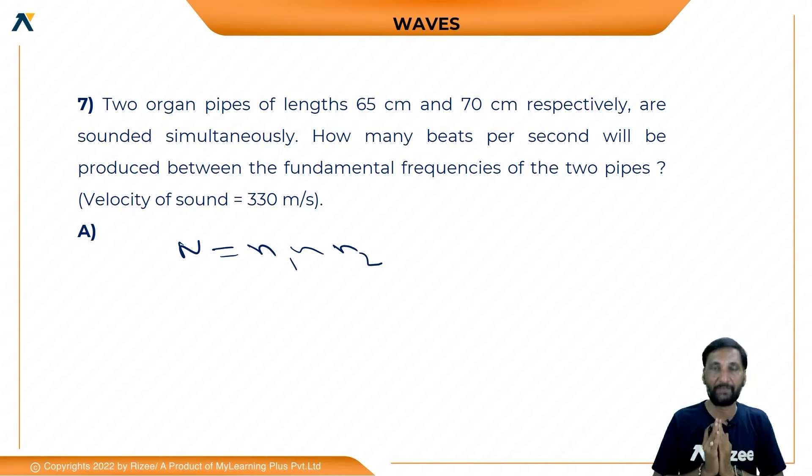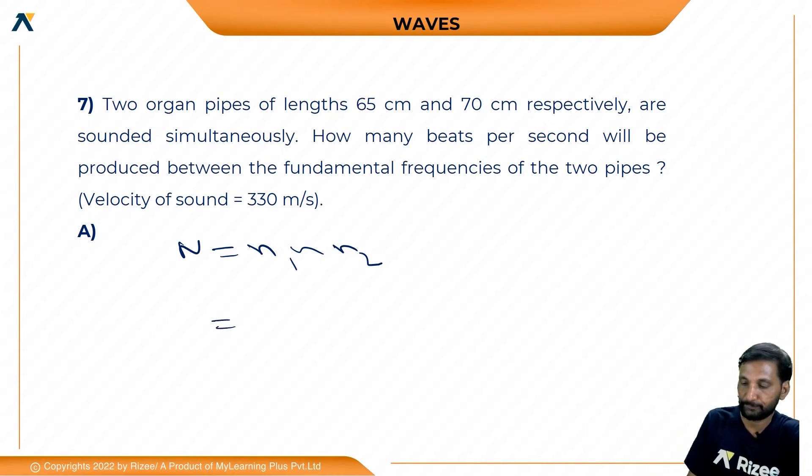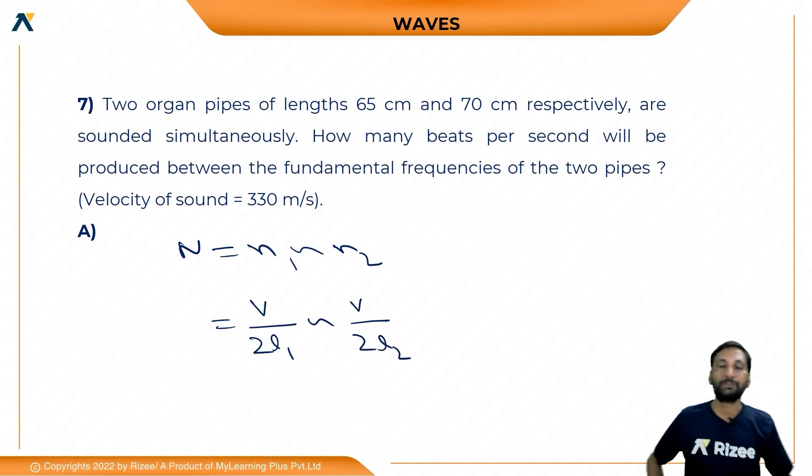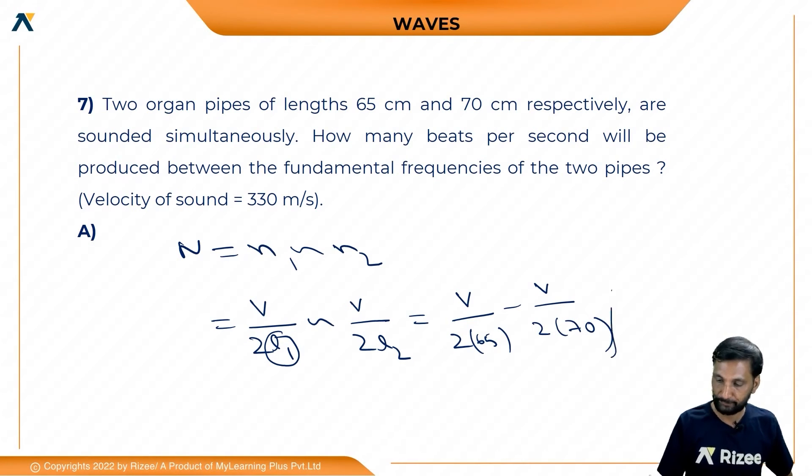So for open pipes, we use v by 2L. The frequency for open pipes is v by 2L1. Now, the length is less than the frequency - this is in the denominator, right? The length is 65 cm. So the formula is v by 2 into 65 minus v by 2 into 70.